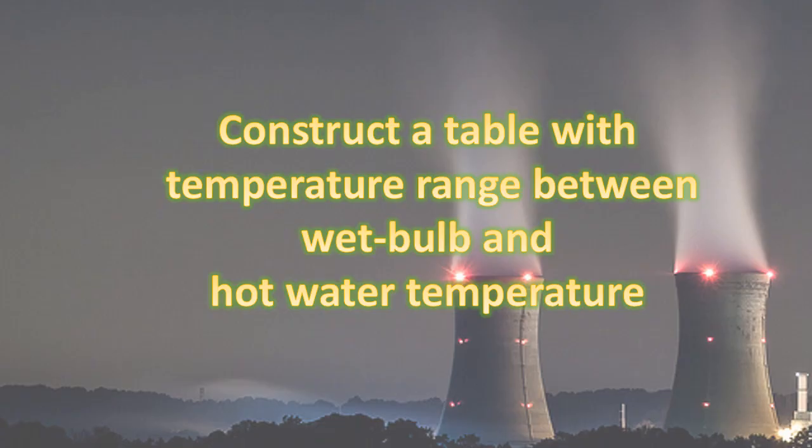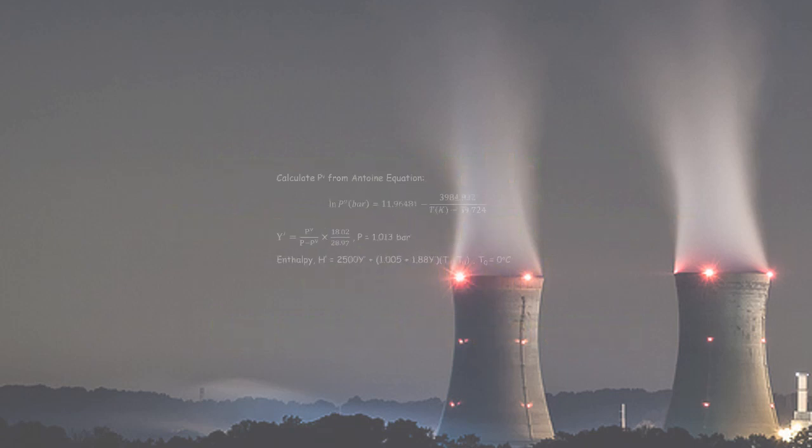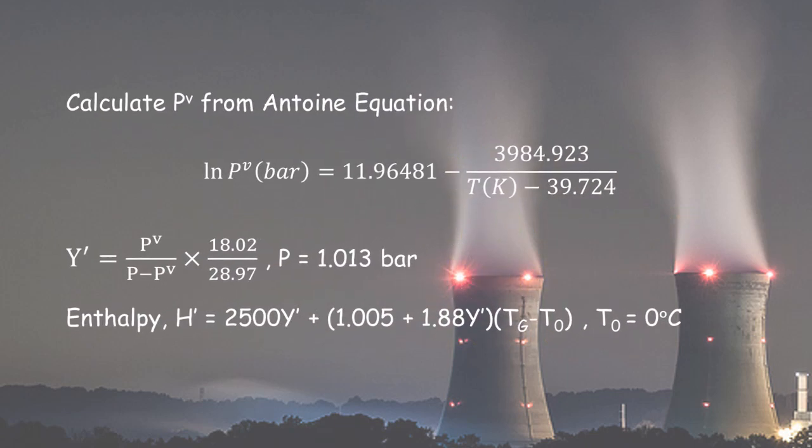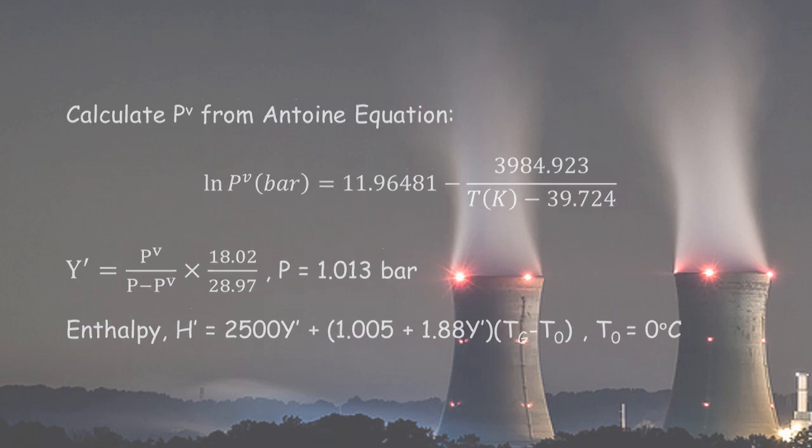Then, construct a table with temperature range between wet bulb and hot water temperature using the equation given, which consists of vapor pressure of water, absolute humidity, and enthalpy of vapor gas mixture.